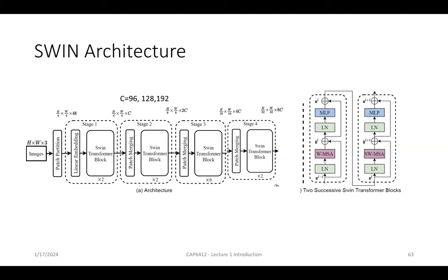The Swin Transformer block takes the embedding from the previous layer, applies layer normalization, then Window Multi-Head Self-Attention (W-MSA) — which is self-attention within a small window, not the whole image. Then we add the skip connection, apply layer normalization and MLP. The output goes to the next block, which applies Shifted Window Multi-Head Self-Attention (SW-MSA) — the window is shifted. Then skip connection, layer normalization, and MLP again. Each pair of blocks alternates between regular and shifted windows.